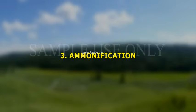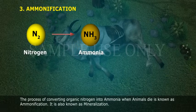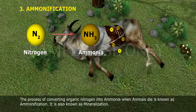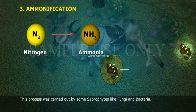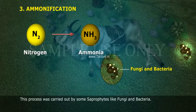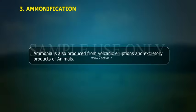3. Ammonification. The process of converting organic nitrogen into ammonia when animals die is known as ammonification. It is also known as mineralization. This process is carried out by some saprophytes like fungi and bacteria. Ammonia is also produced from volcanic eruptions and excretory products of animals.